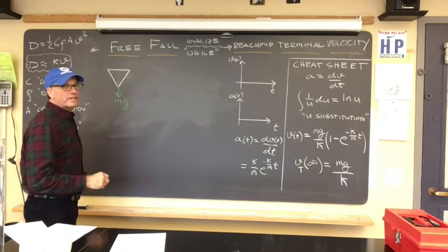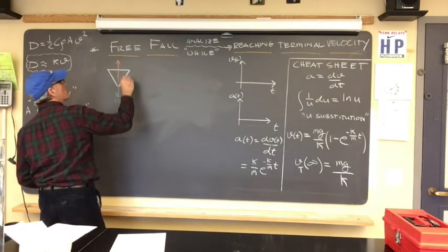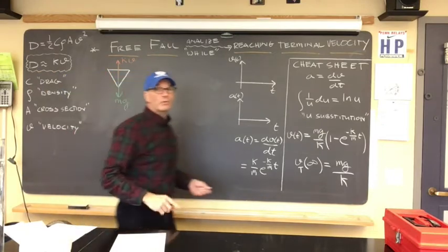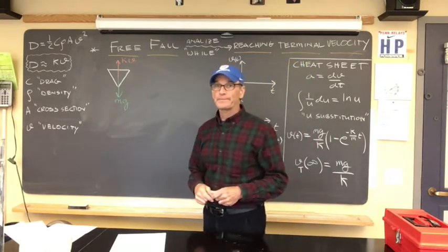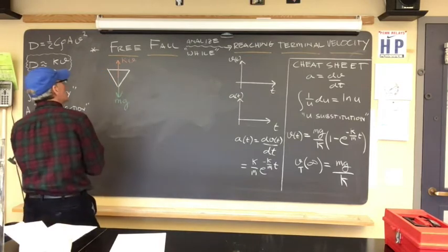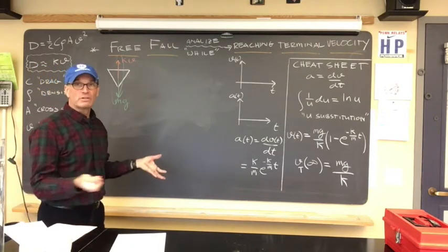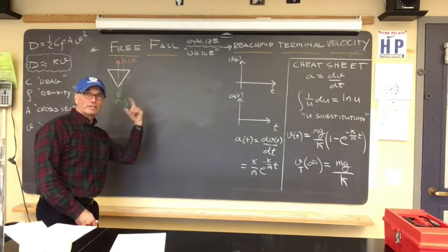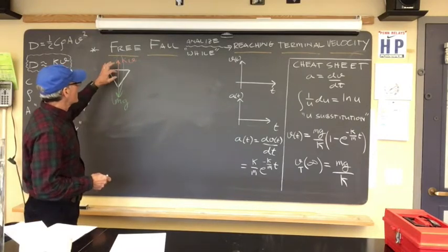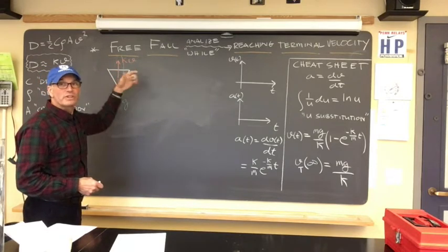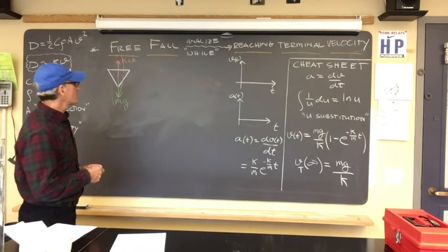I'll use green to represent the weight of the object — mg — going toward the green grass of the earth. And then I'll show in red the drag force, which we're going to call KV. We're going to simplify that one-half C·rho·A·v² to KV. So we have a net force in here. Eventually when KV equals mg, then the net force is zero.